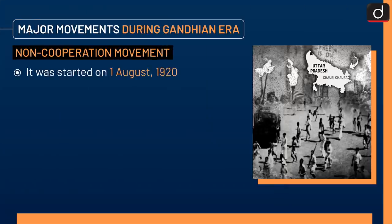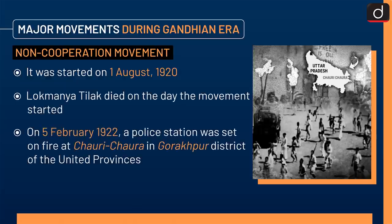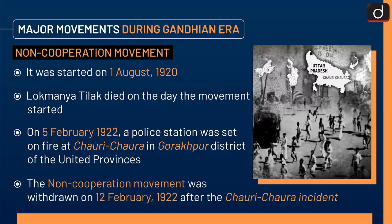Next is the Non-Cooperation Movement, started on 1 August 1920. Lokmanya Tilak died on the day the movement started. On 5 February 1922, a police station was set on fire at Chauri Chaura in Gorakhpur district of the United Provinces. The Non-Cooperation Movement was withdrawn on 12 February 1922 following the Chauri Chaura incident.